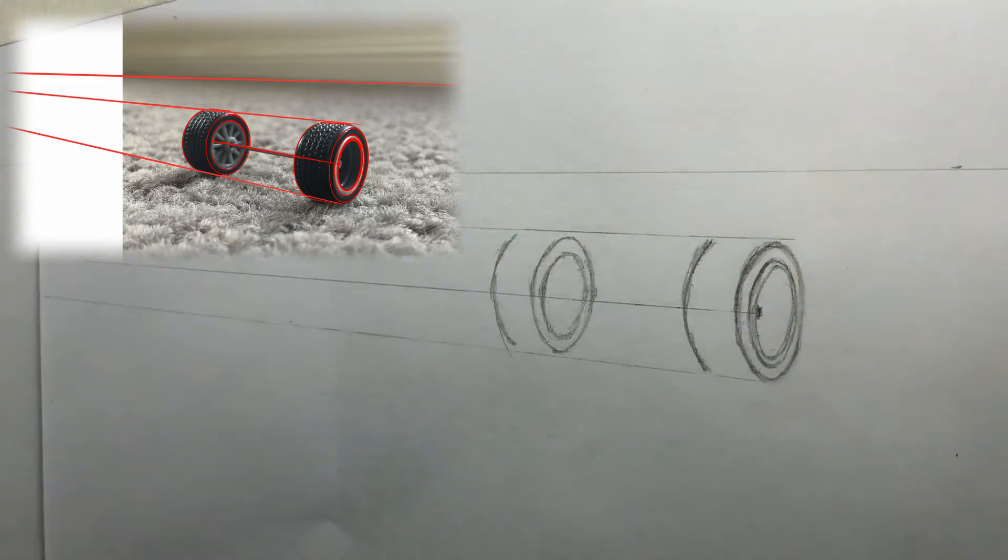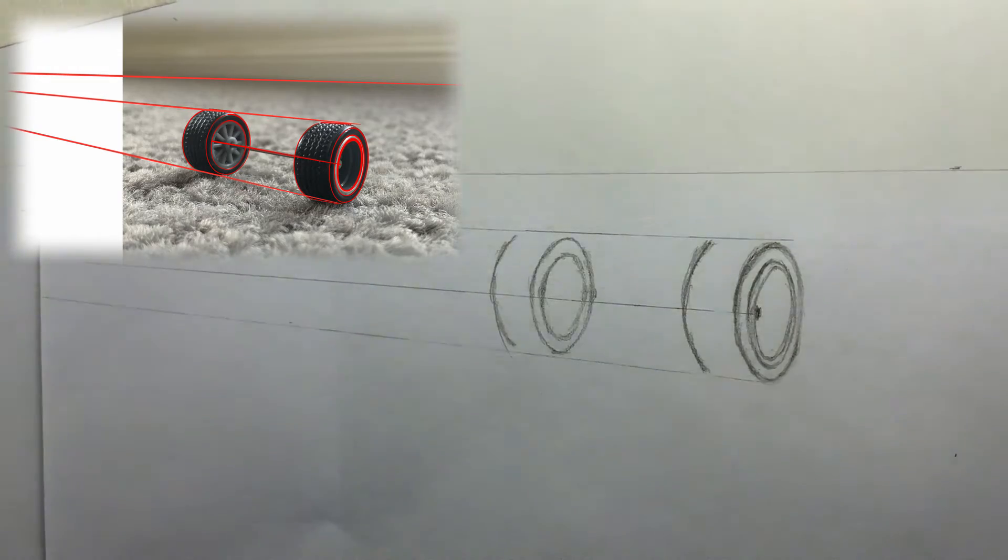Now add tiny curves to the largest ellipses. For each wheel, make the curves face in towards each other. These lines will actually touch the perspective line.